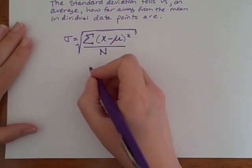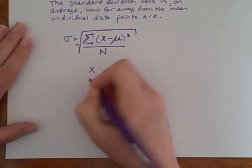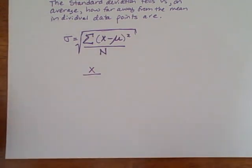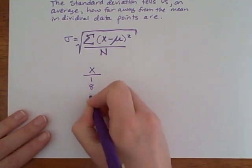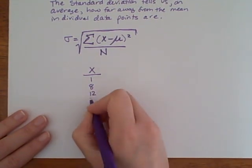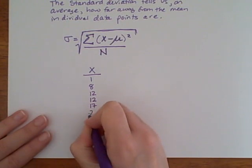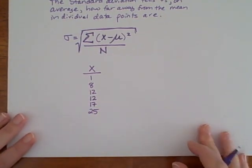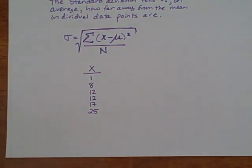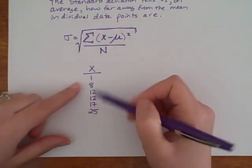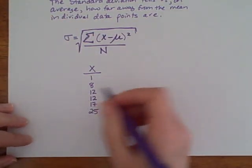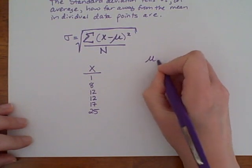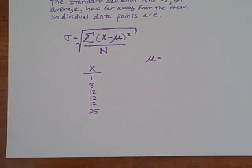So let's say that I had a data set and let's say that my individual data values, my x values, are 1, 8, 12, 12, 17, and 25. Okay, so there are my pieces of data. For each of these, for the computation, the thing that I'm going to need to do is take each of these pieces of data and subtract the mean. So one thing that I need to know right up front is what is the mean for this set of data.